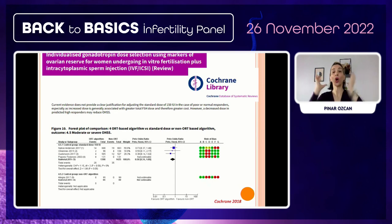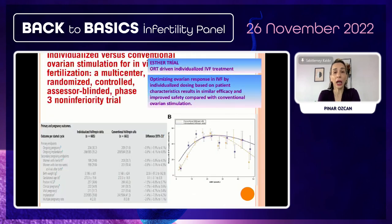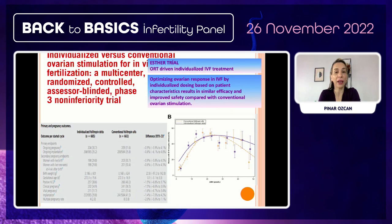A coherent analysis result shows there is no meaningful data to justify adjusting standard dose in poor and normal responder patients. However, you can decrease starting FSH dose at the beginning of ovarian stimulation to reduce the risk of OHSS in hyper-responder patients. The ASTAR trial — also an RCT evaluating ovarian reserve marker-driven individualized IVF treatment — used BMI and AMH level as markers. They concluded that optimizing ovarian response in IVF cycles by individualizing starting FSH dose based on patient characteristics results in similar efficacy and improved safety compared with conventional ovarian stimulation.